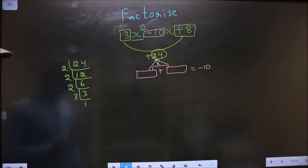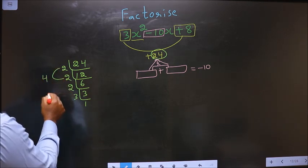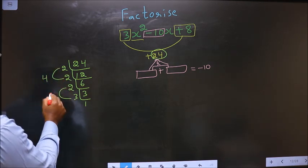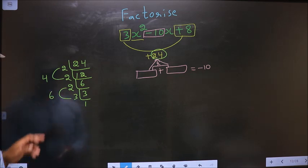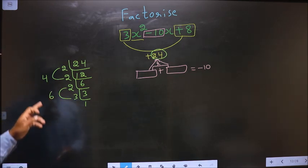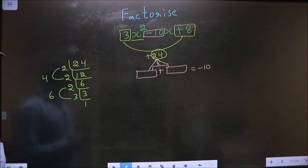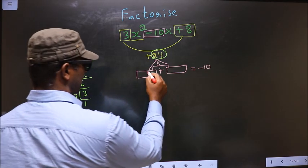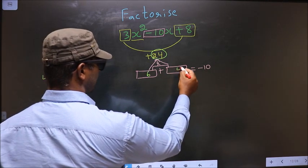Now the two numbers should be 2 into 2, 4, and the second number is 2 into 3, 6. 6 plus 4 is 10, 6 into 4 is 24. So here I write 6 and here I write 4.